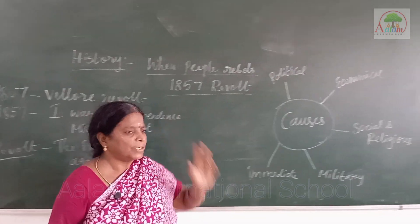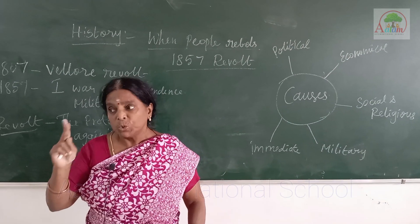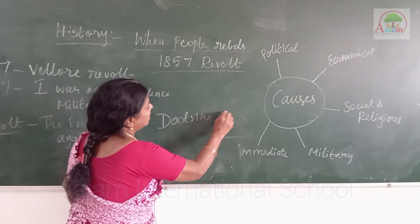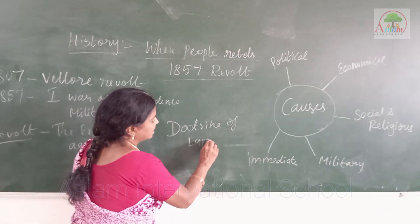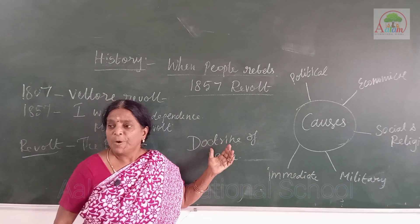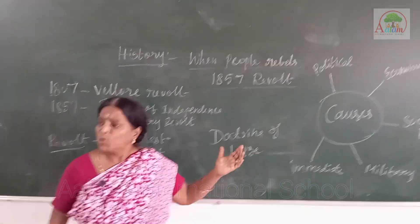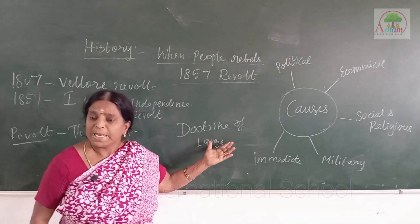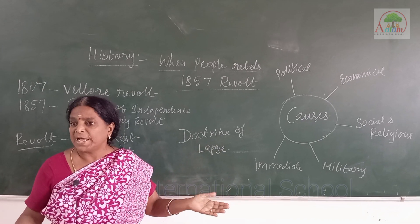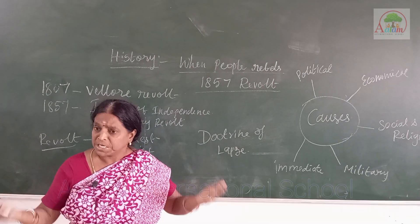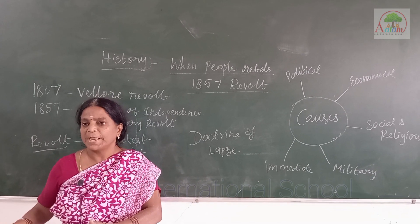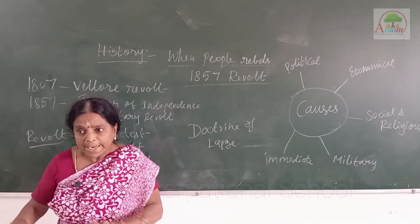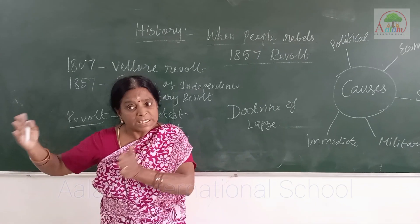The first political cause: under political causes there are two reasons. First one is the Doctrine of Lapse, an important policy by Lord Dalhousie. This means the king or queen who did not have any children should not adopt any child. If he or she adopted a child, only the treasure would go to the child, not the kingdom — the kingdom would be annexed by the British.